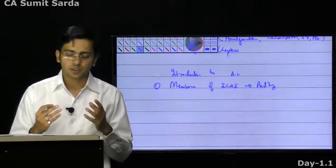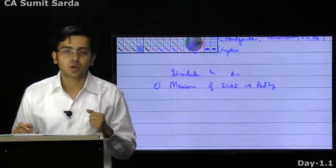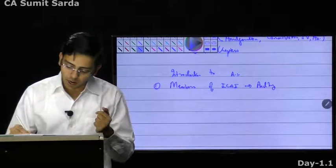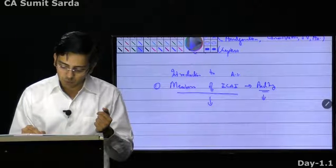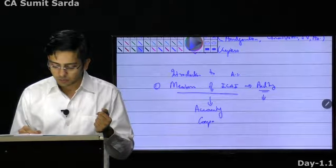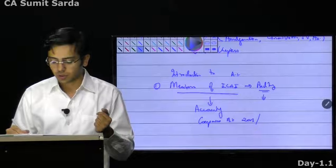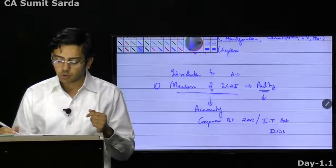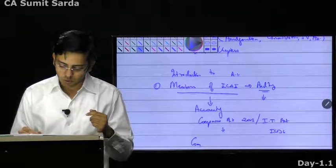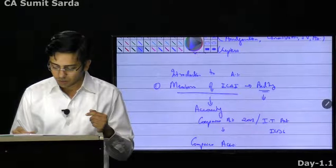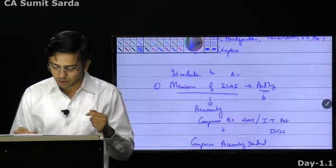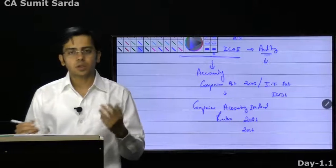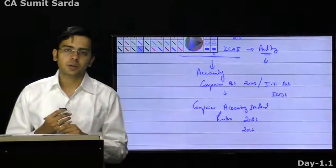Over the period we have seen that accounting standards, which were supposed to be used only for auditing purpose by the members of ICAI — the chartered accountants — have moved towards accounting as well. We have seen Companies Act 2013 talking about accounting, and Income Tax Act talking about accounting through ICDS. When we talk about Companies Act, it talks about accounting using Companies Accounting Standard Rules.